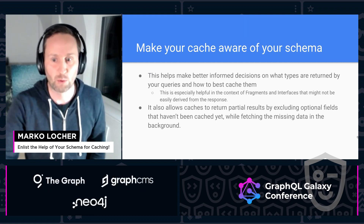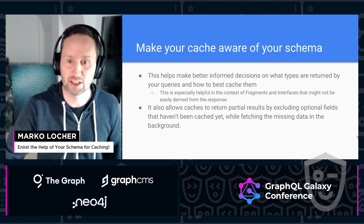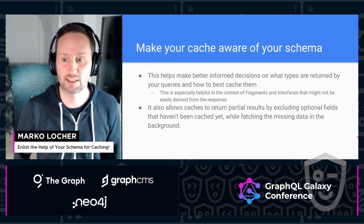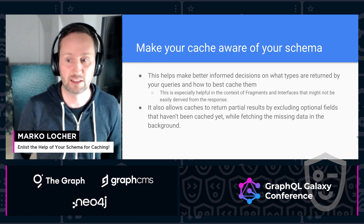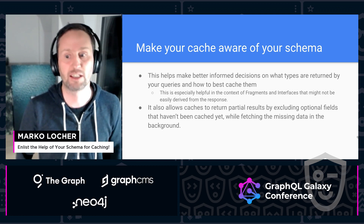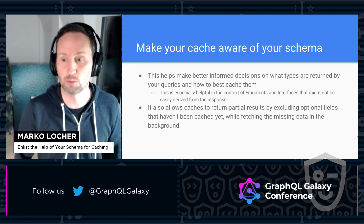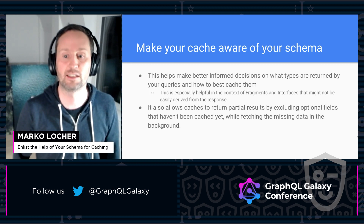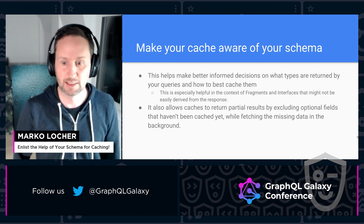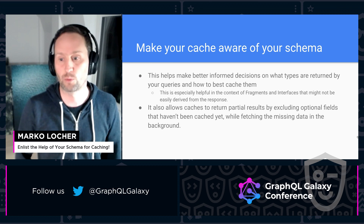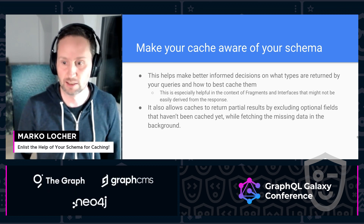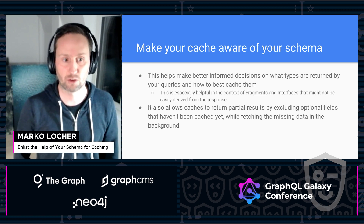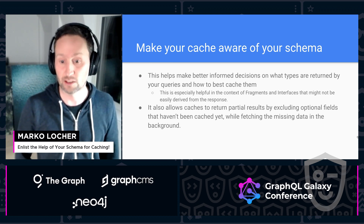Very important as well is to make sure that your cache is aware of your schema. Every cache will offer some functionality whether it's aware of the schema or not. However, if you make your cache aware of the schema of your data, you will unlock additional functionality that wouldn't be possible otherwise. It can make smarter decisions based on what types are returned by your queries — something that is especially important in the context of fragments or when you're using interfaces.